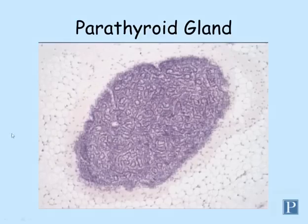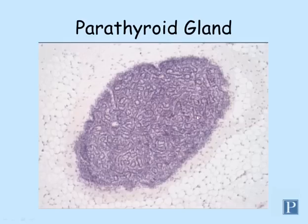Here is a higher magnification view of the parathyroid gland. Observe the presence of the basophilic cords of cells. You don't need to be able to distinguish between specific types of cells in the parathyroid gland — we're not going to go into that much detail.